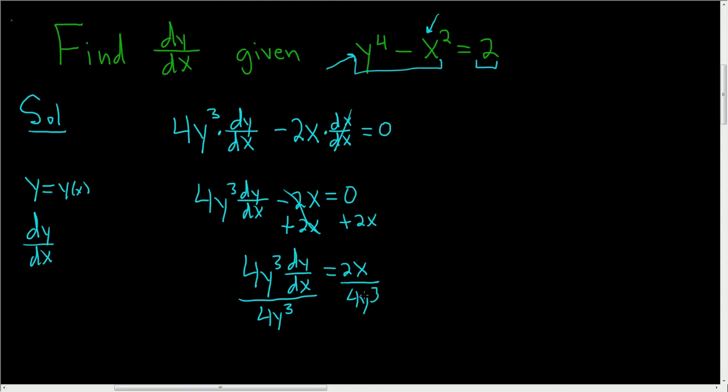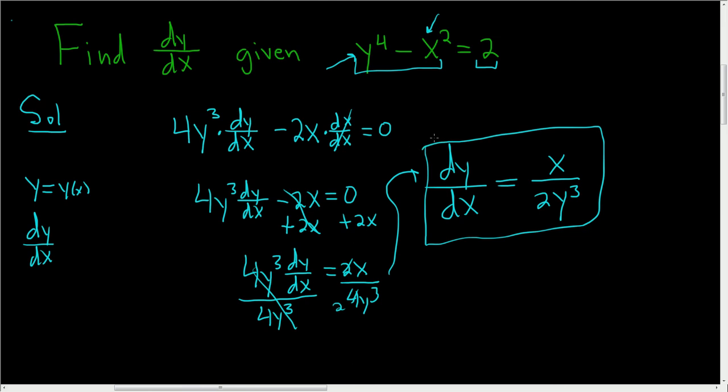And then finally, I suppose we could divide by 4y cubed. So dividing both sides, we end up with dy/dx equals, let's see, we still have the x. 2 goes into 4 two times. So it'll be x over 2y cubed. And that is the final answer. I hope this helps. Thank you.